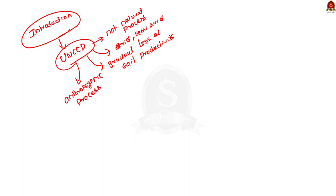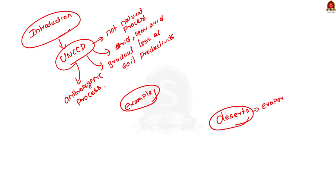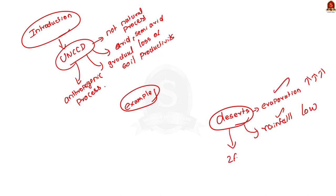Coming to the body of the answer: the question gives a statement that desertification does not have climatic boundaries and we have to substantiate this with examples. Deserts are areas where evaporation exceeds precipitation. The formation of desert is controlled by precipitation and evaporation. To answer this question, we have to look for examples where deserts are formed not due to lack of precipitation or increased evaporation, but due to other factors — mainly anthropogenic factors.